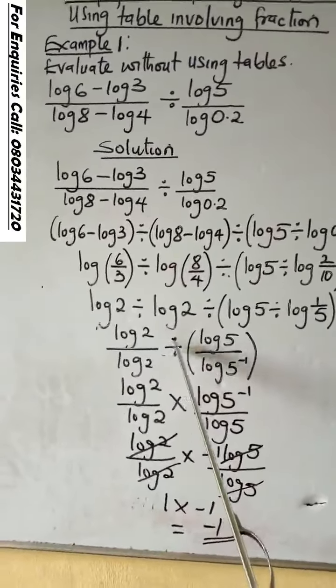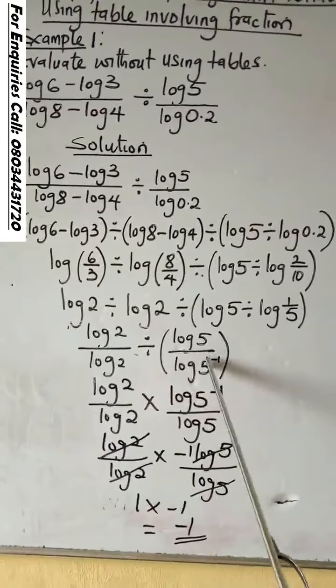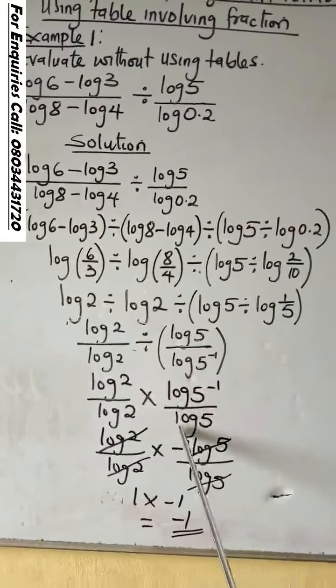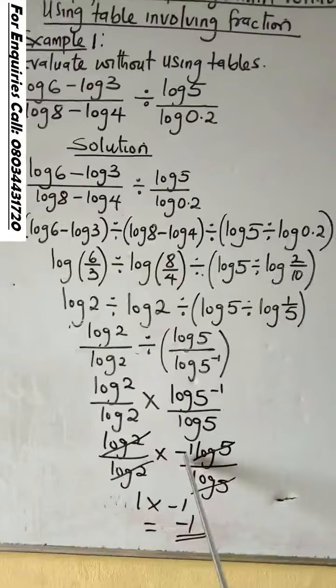Log 5. Because of this division, change it to multiplication. It will be log 5 raised to the power minus 1 over log 5. This raised to the power minus 1 will go to the front of the log.